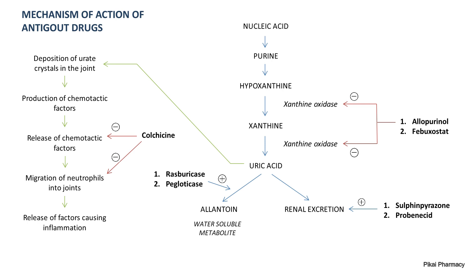Two additional drugs not previously mentioned are rasburicase and pegloticase. These drugs promote the formation of allantoin, a water-soluble metabolite of uric acid, thus promoting its excretion. This concludes the overview of anti-gout drugs. Thanks for watching — stay healthy!